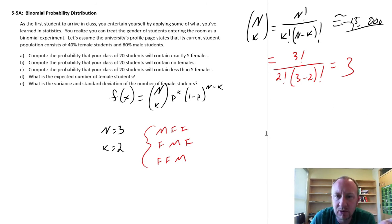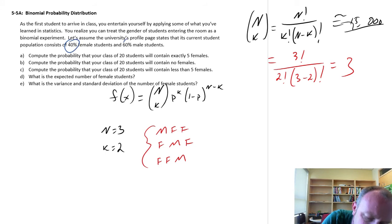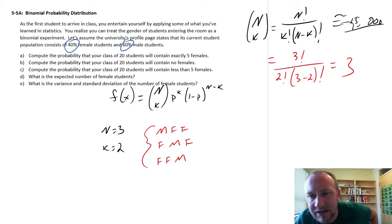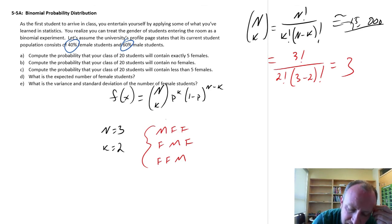What are the probabilities now associated with each of these? So if I look at this first one, well the probability if I use the university's profile to give me some idea of the probability of each of these students or each of these genders entering the room. The probability of this, let's call this experimental outcome number one.